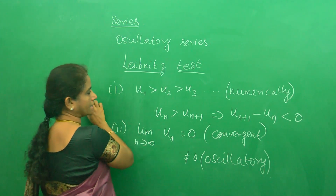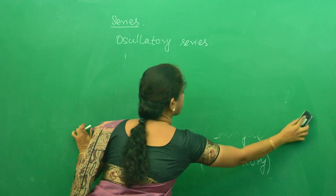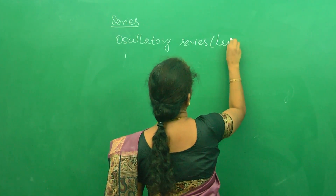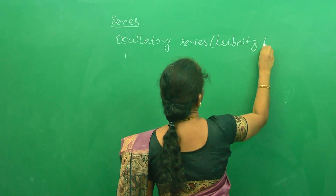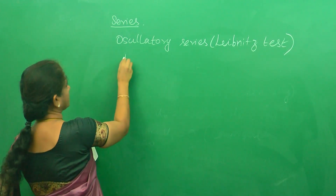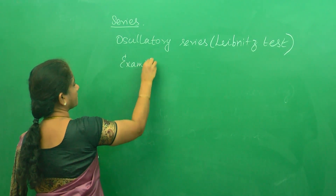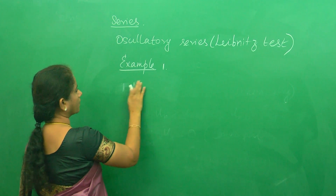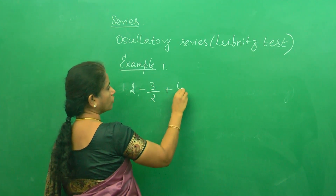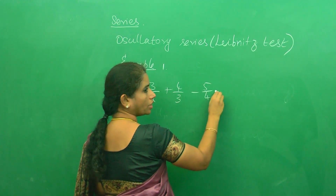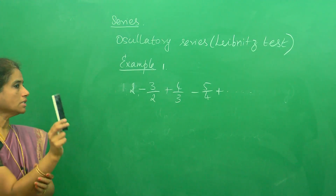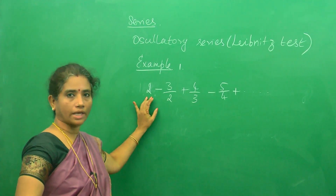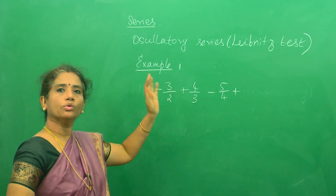Now let us do a few examples. In the oscillatory series we are going to apply Leibniz test. First, test the convergence of 2 − 3/2 + 4/3 − 5/4 + etc. This appeared in Anna University 2012 question paper. We are going to find the nth term, find the (n+1)th term, and then compare un+1 minus un.